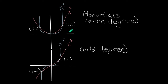There are some additional features: x to the fourth is actually smaller than x squared as long as the x value is less than 1, and if the x value is greater than 1, then x to the fourth is bigger than x squared. You can see a similar feature where x to the fifth is a bit smaller than x cubed if the x value is less than 1.